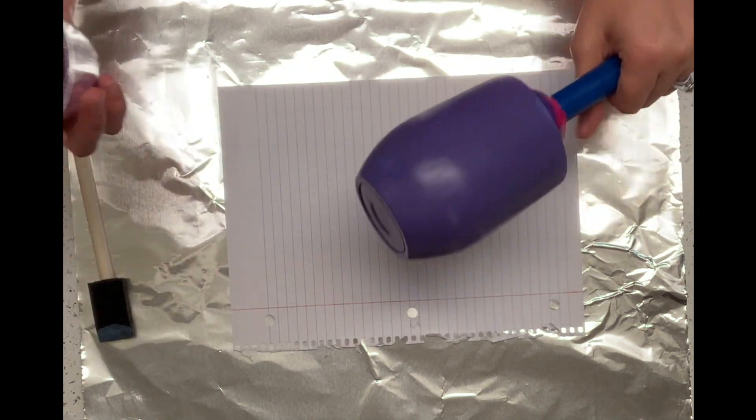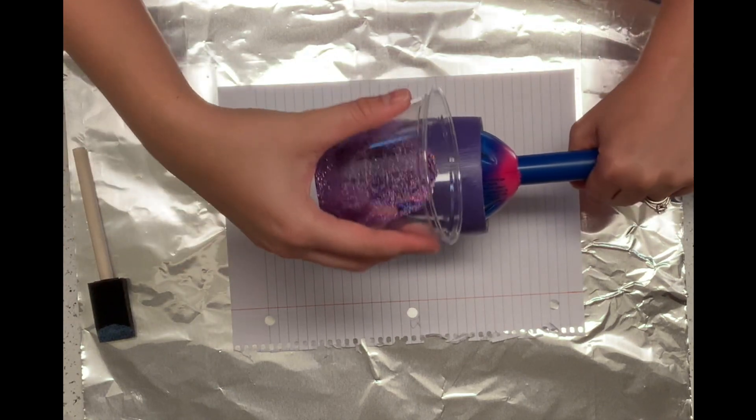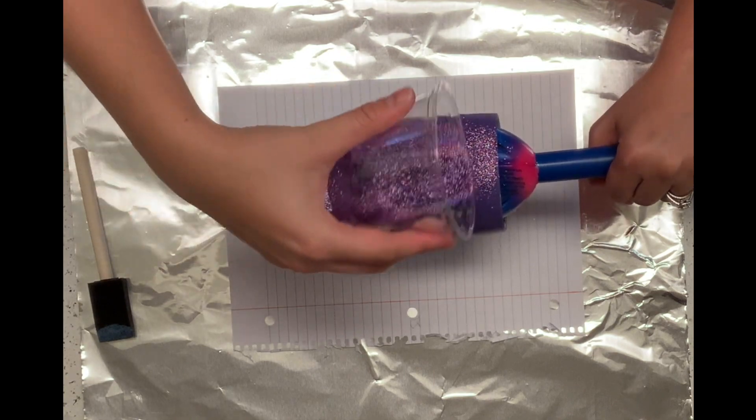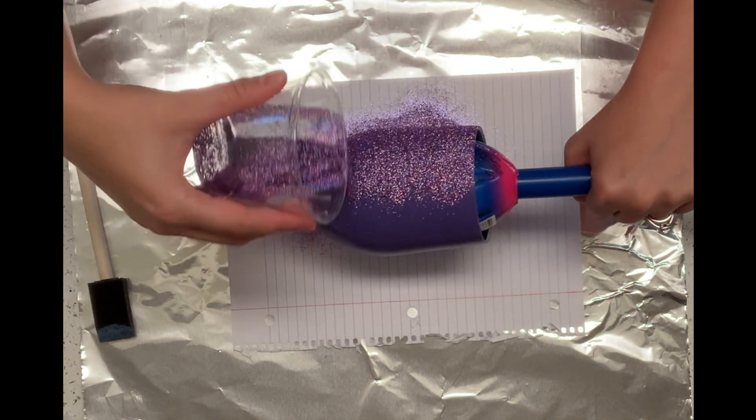I'm going to apply it the same way I would with the epoxy method. I'm going to hold it over the paper and shake it lightly onto the cup back and forth all the way around.